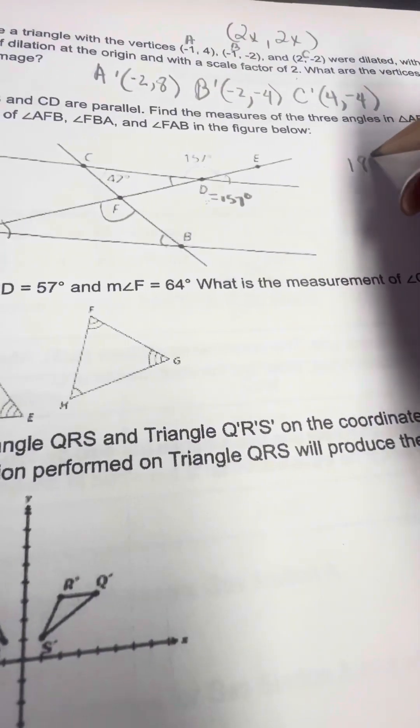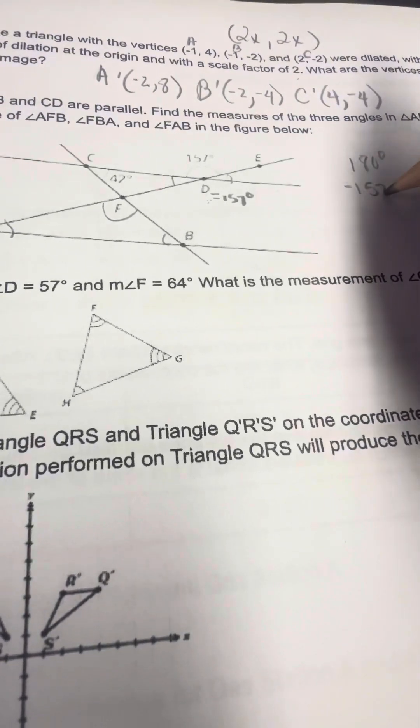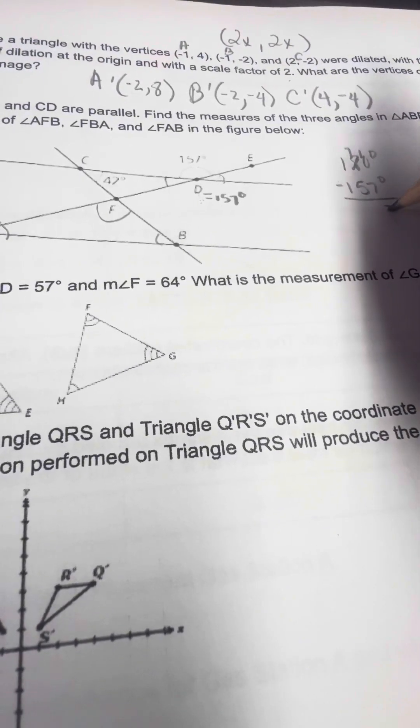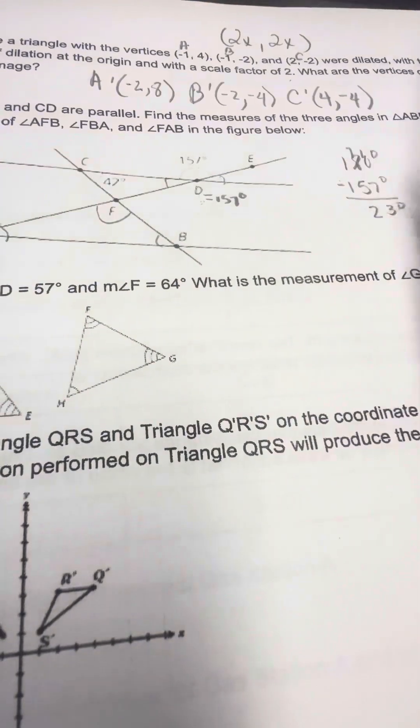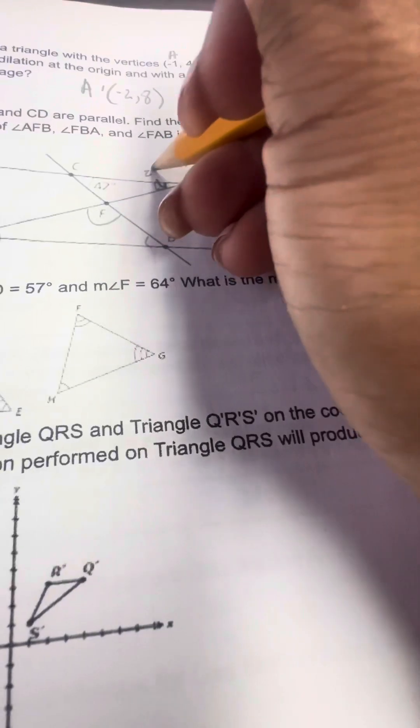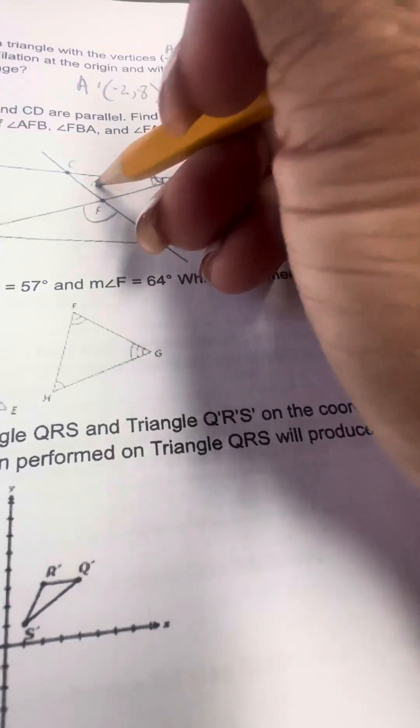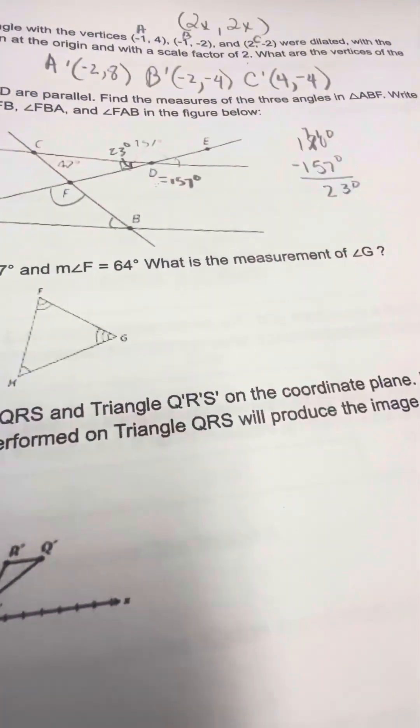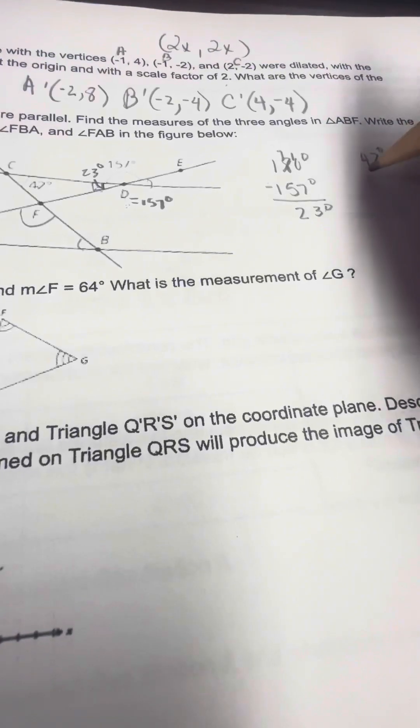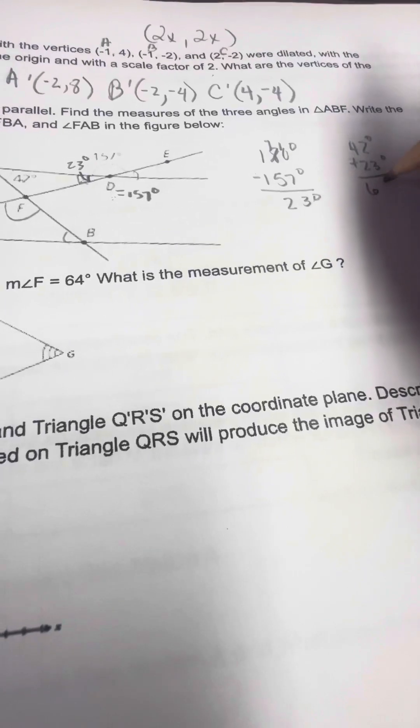So 180 degrees are supplementary angles when added together. So if I subtract 157 from that, you borrow, this becomes a 7, this is 3. So that angle is 23. So this angle here is 23, and this angle is 42. So I'm going to take the 42 degrees plus 23, and that is 65 degrees.